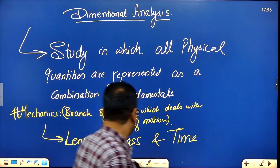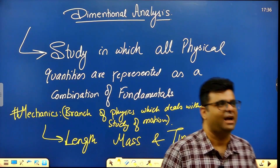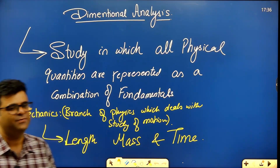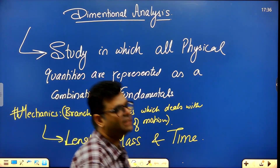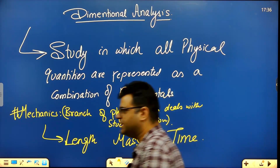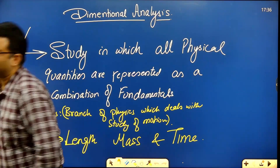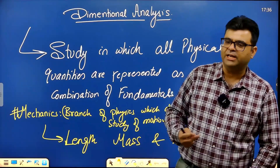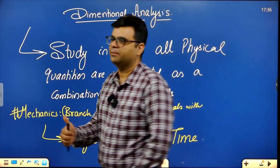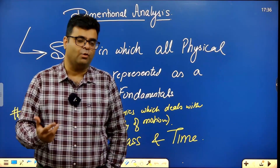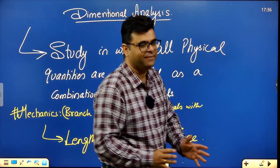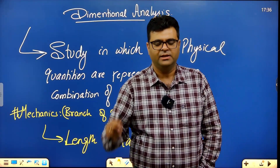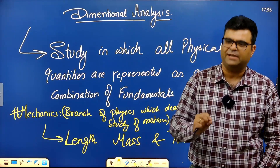Let's start today's topic of dimensional analysis. We started this last time. First I will give you a brief introduction for the first class, and then we will proceed with today's topic. There are two types of physical quantities — fundamental quantity and derived quantity. Fundamental quantity is the basic quantity.